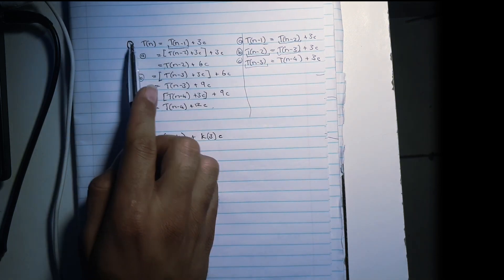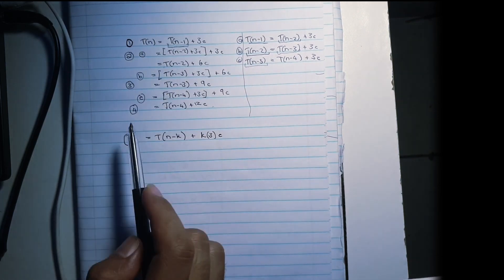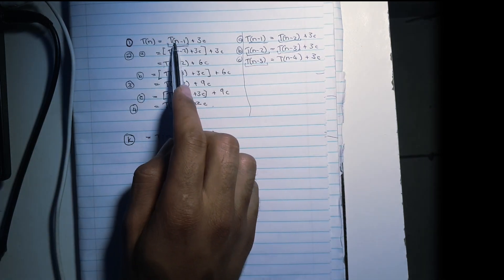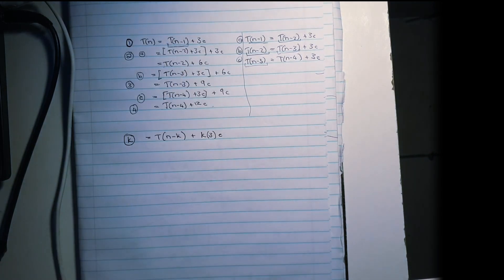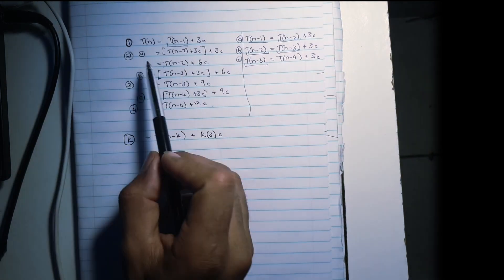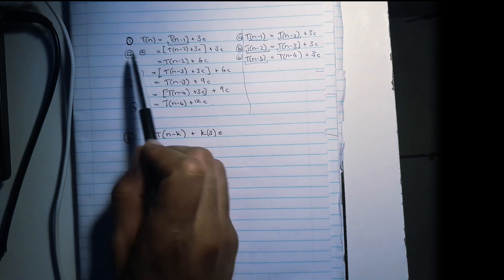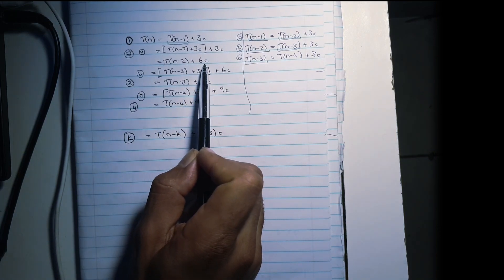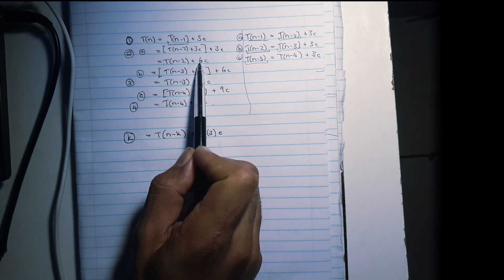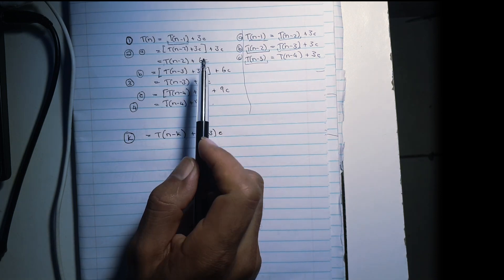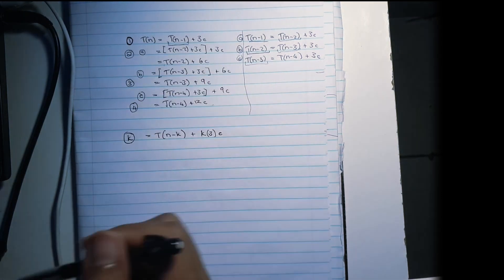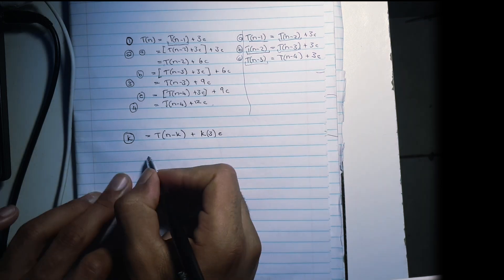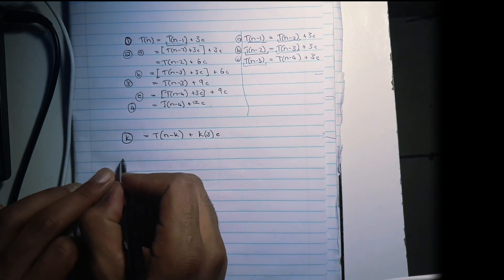When K was one, our expression is T of N minus one plus 3C. Then K was two, and our expression was T of N minus two plus 6C, which is the same thing as three times 2C. After this, we're going to look at what happens at termination.